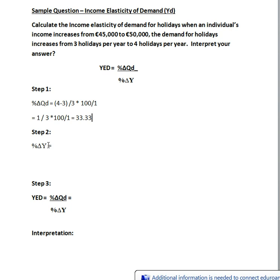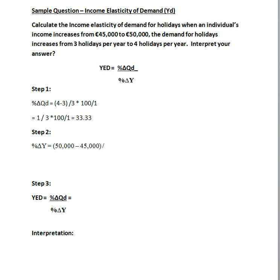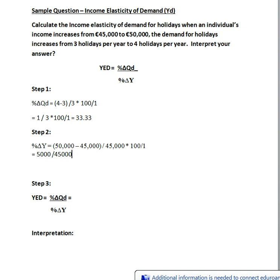Step two is to work out the percentage change in income. Income has increased from 45,000 to 50,000 euros, so the new income — 50,000 — minus the old income — 45,000 — divided by the old income of 45,000, and multiply by 100 to get your percentage.